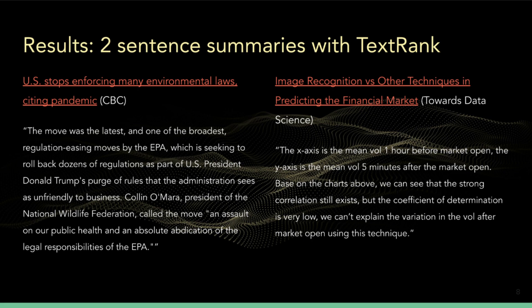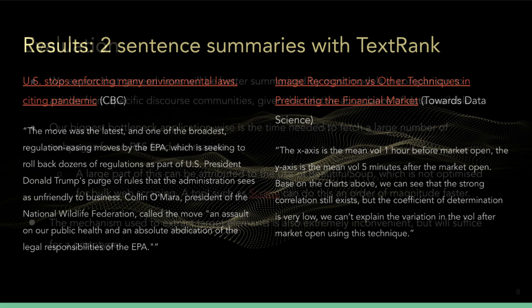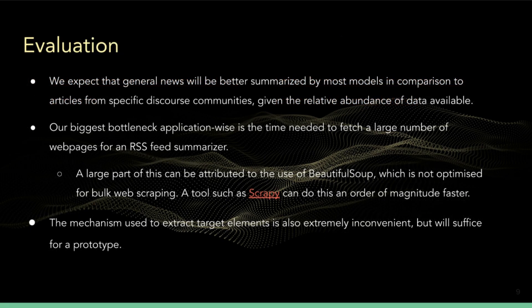Here we can see two example summaries using the TexRank model. Each summary consists of two sentences drawn from a much longer article. The first is a news article regarding the current pandemic, and the other is a technical article about forecasting and the financial market. TexRank does a much better job with the news article compared to the technical article. Our biggest bottleneck application-wise is the amount of time needed to fetch a large number of web pages from the RSS feed. A large part of this can be attributed to BeautifulSoup, which is not optimized for bulk web scraping. A tool such as Scrapy can do this an order of magnitude faster, but it has a significant learning curve.